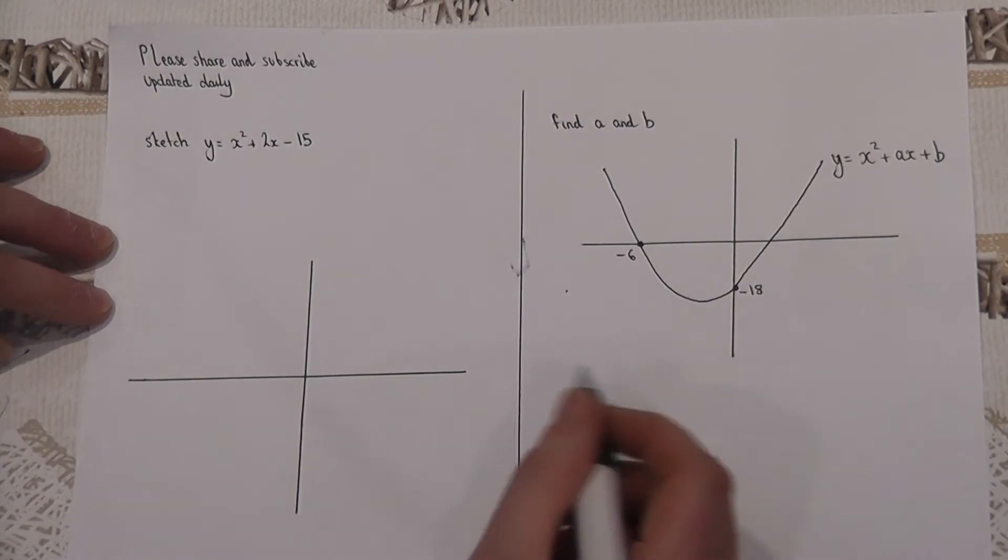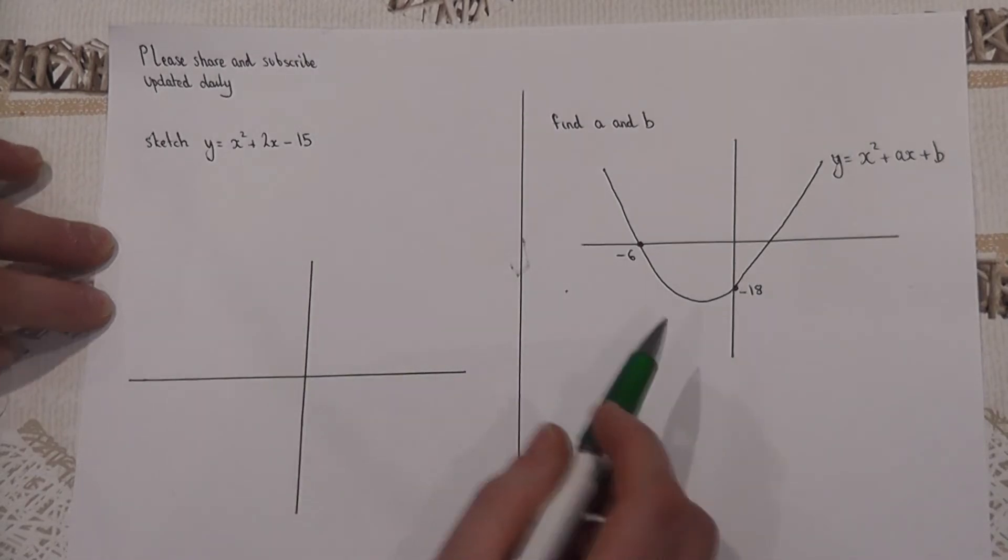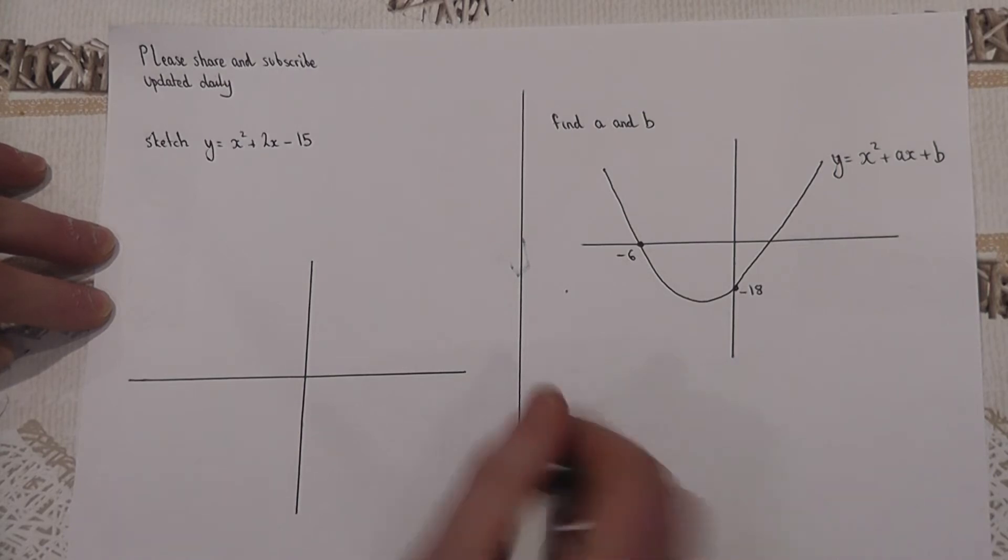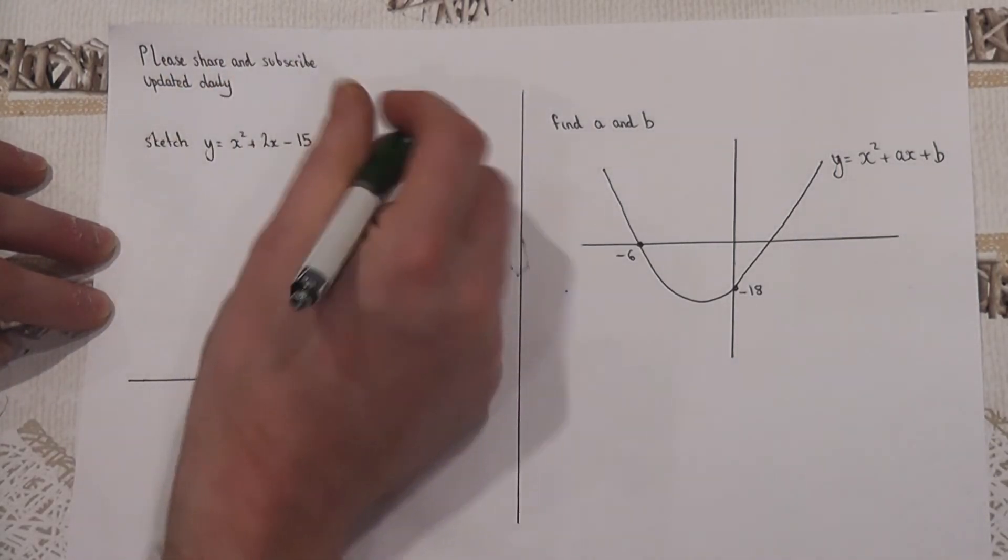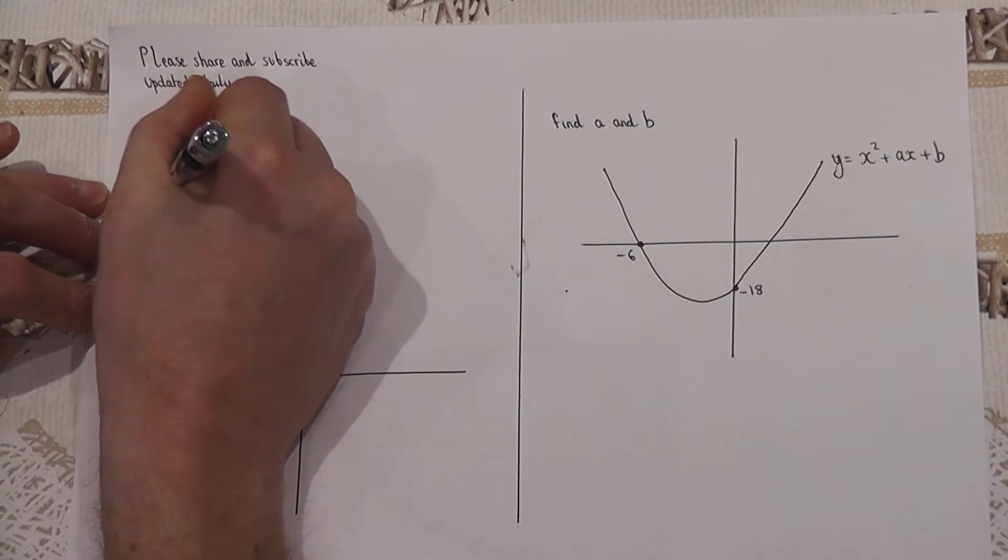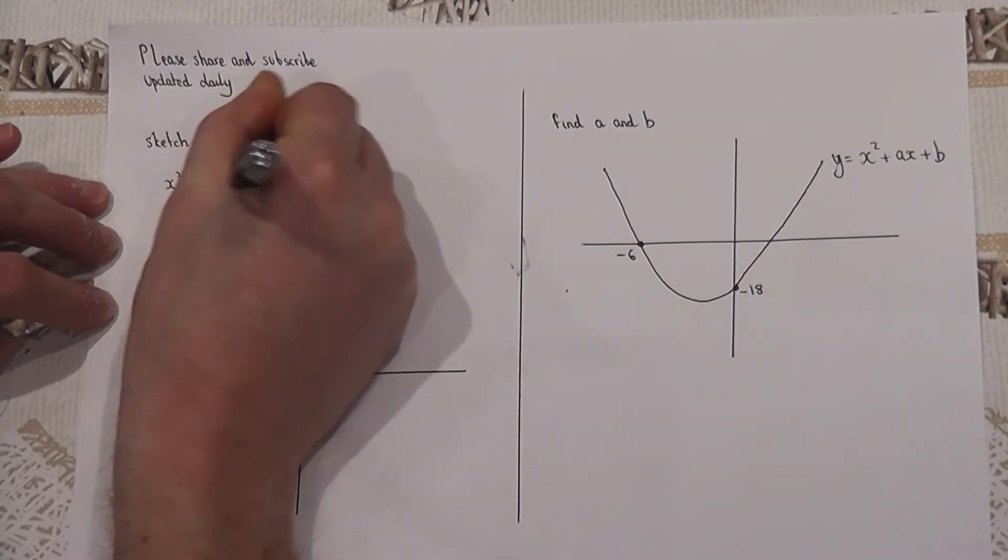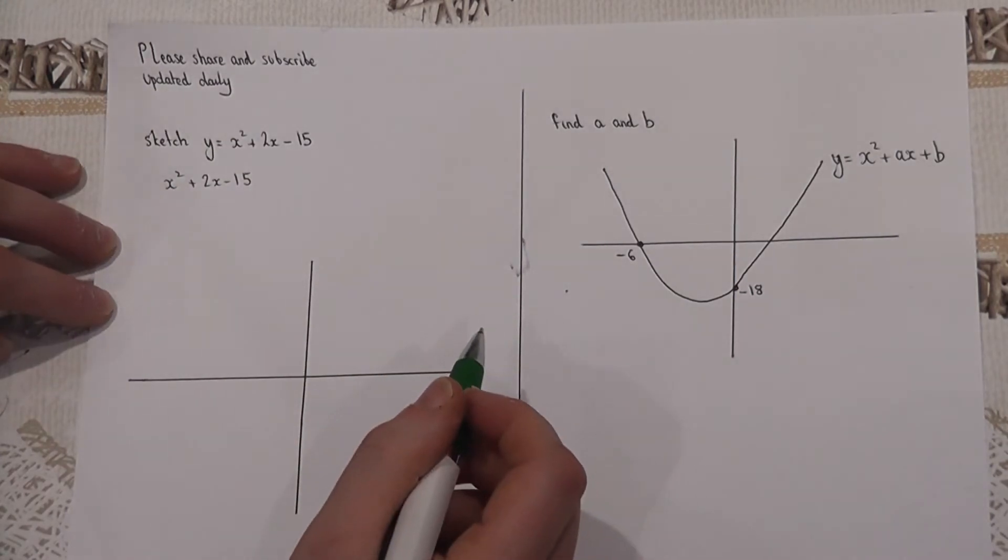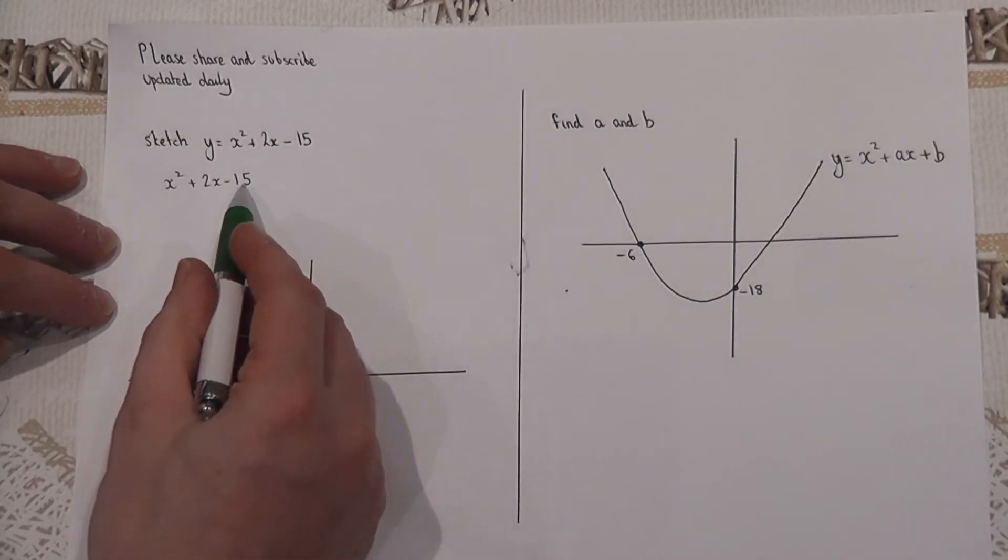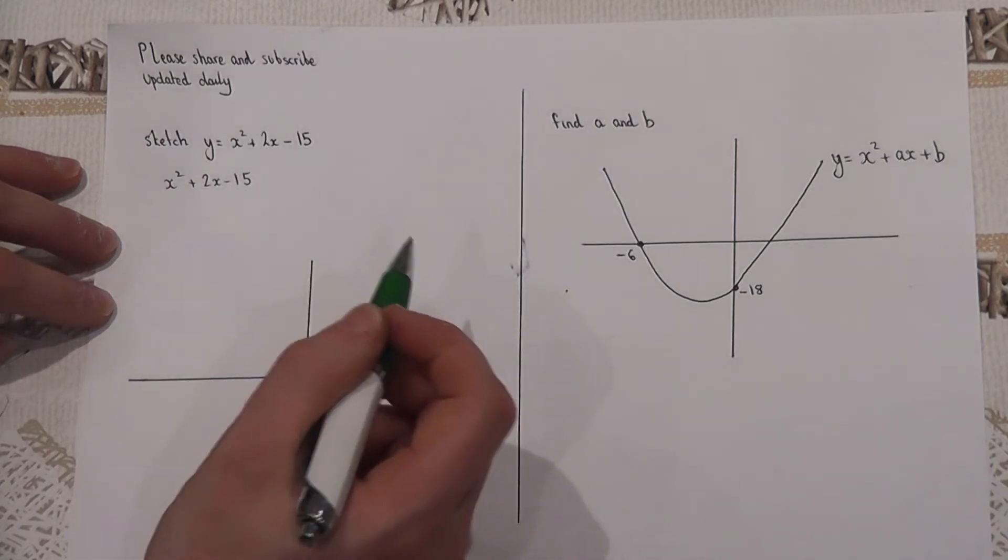Now if we've got an x squared quadratic graph, we can attempt to factorize. To factorize what we need are two numbers which multiply to make the constant and basically add to make the middle number here.